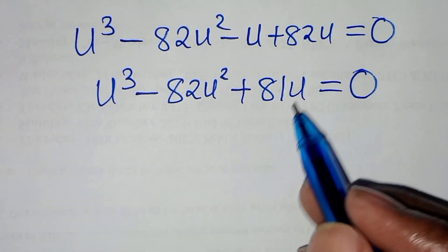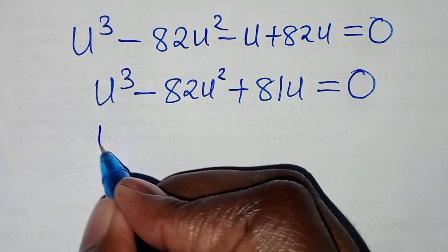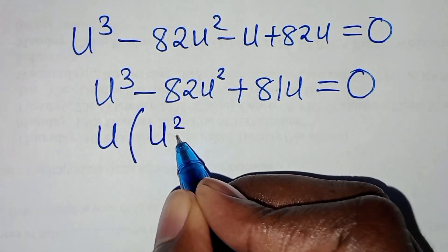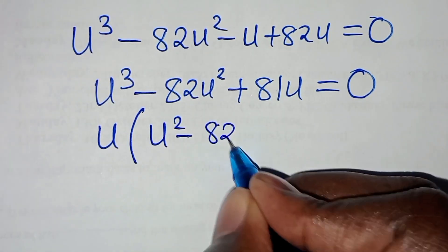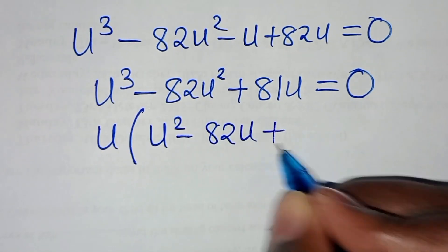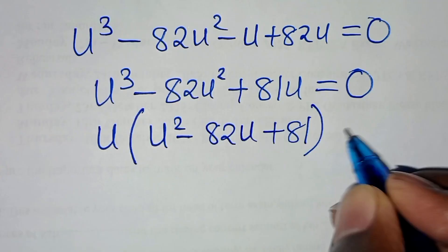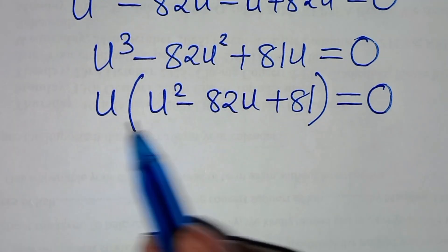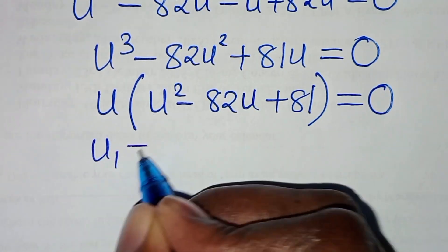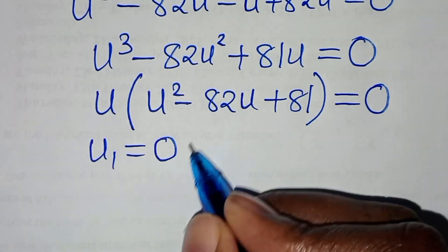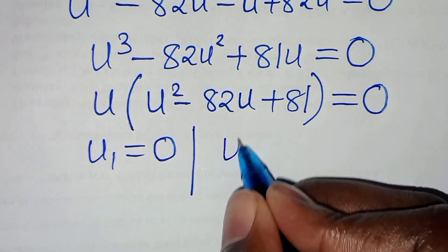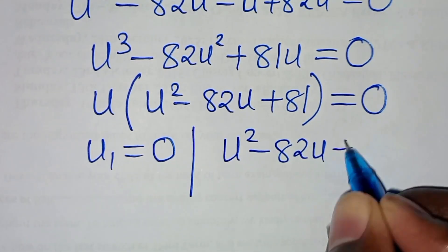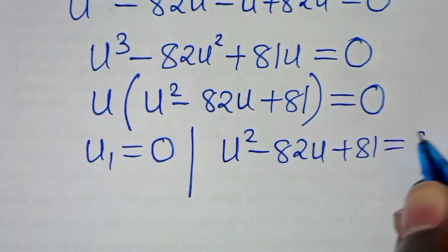Since u is common, we factor it out to get u times (u squared minus 82u plus 81) equals 0. This gives us two parts: u equals 0, and u squared minus 82u plus 81 equals 0.